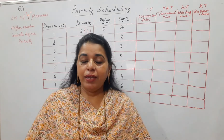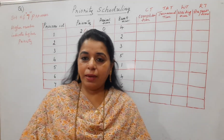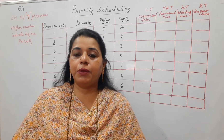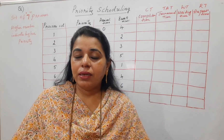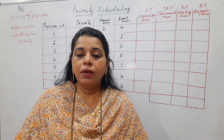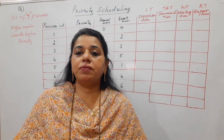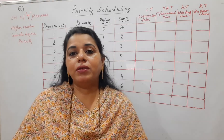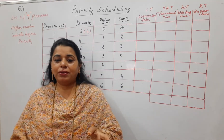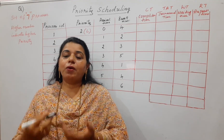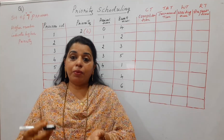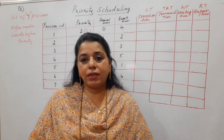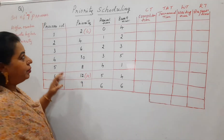Why do we give importance to certain processes? Processes can be of two types: user-level and kernel-level. When a kernel-level process competes with a user-level process, the kernel process should be given higher priority. Even among system processes competing with each other, we need to determine which carries the more important task and assign higher priority accordingly. This is how priorities are decided.